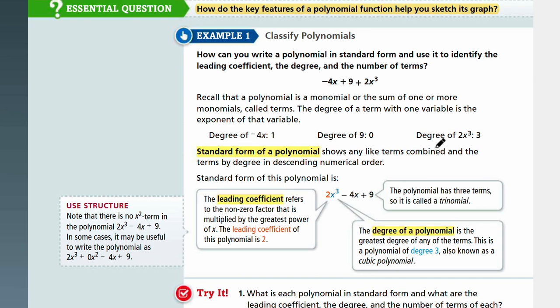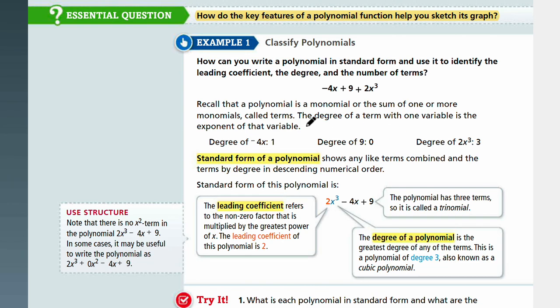Let's continue looking at Example 1. How can you write a polynomial in standard form and use it to identify the leading coefficient, the degree, and the number of terms? Negative 4x plus 9 plus 2x cubed.